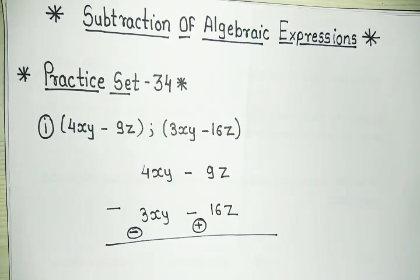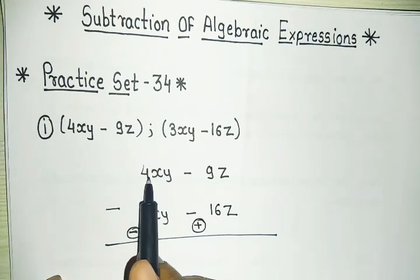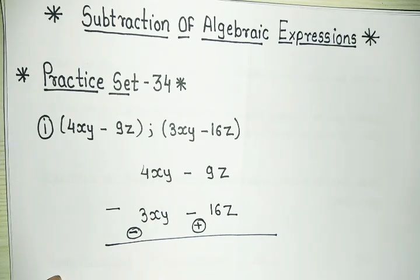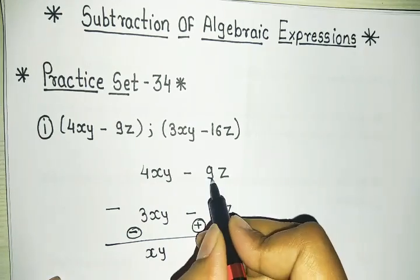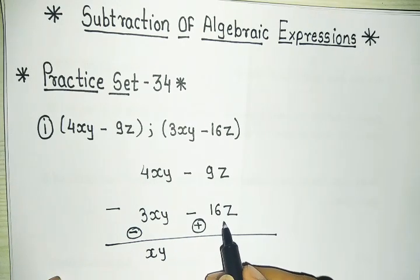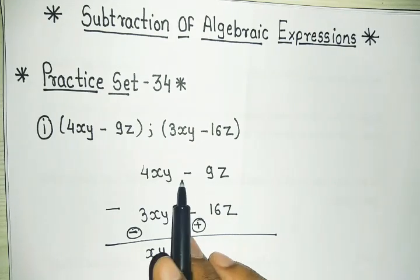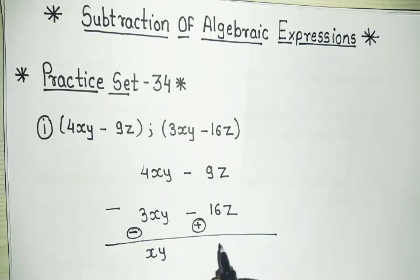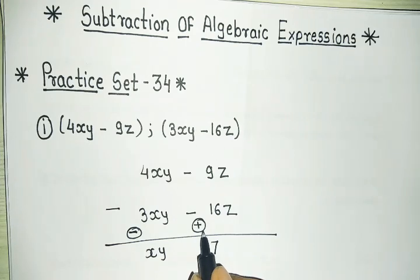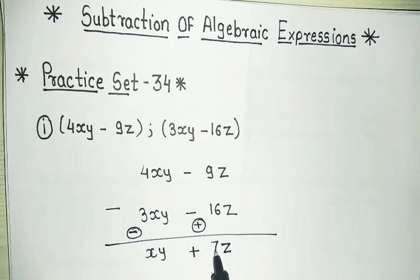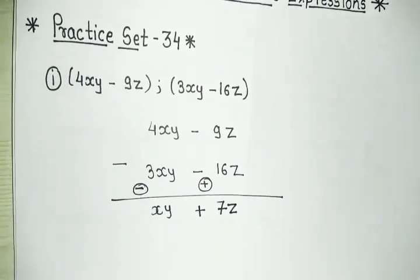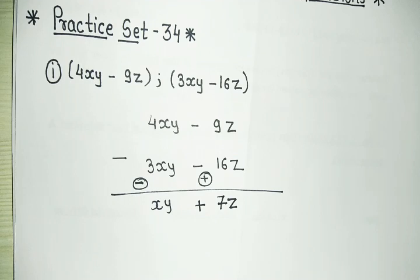This minus sign changes the signs of the second equation. What is 4xy minus 3xy? That is xy. Now 9z: 9 is minus and 16 is plus, so minus plus becomes minus. The difference is 16 minus 9 equals 7, and the sign of the bigger number 16 is plus. So it is plus 7z. My answer is xy plus 7z.